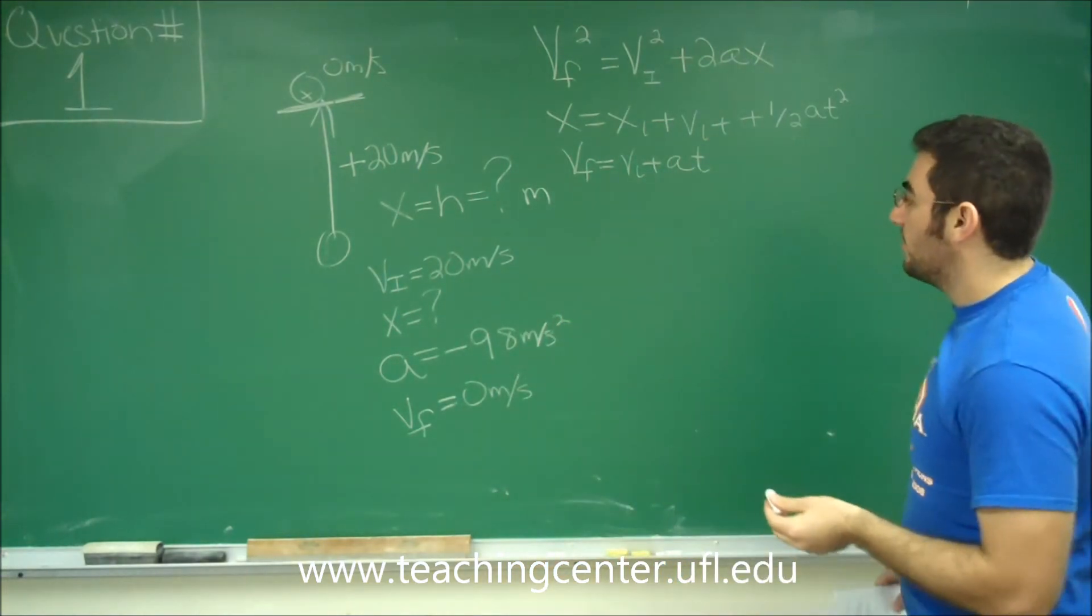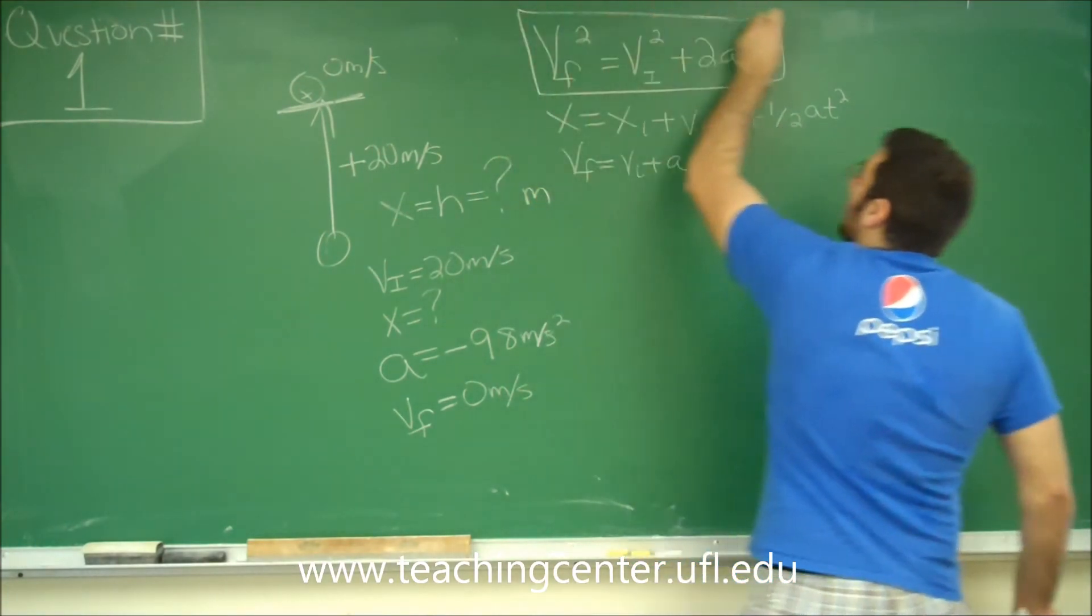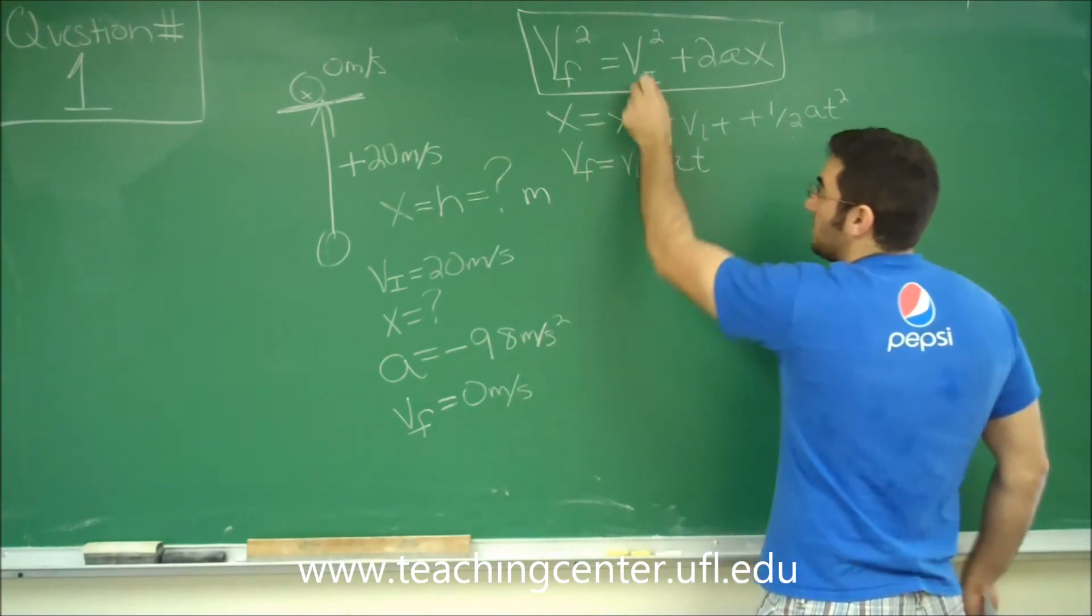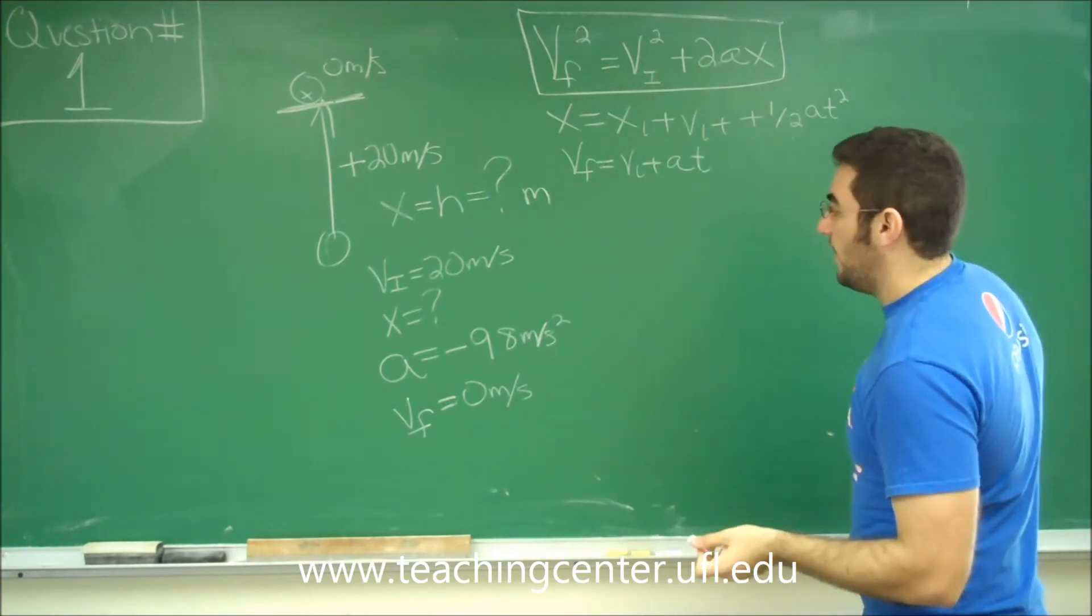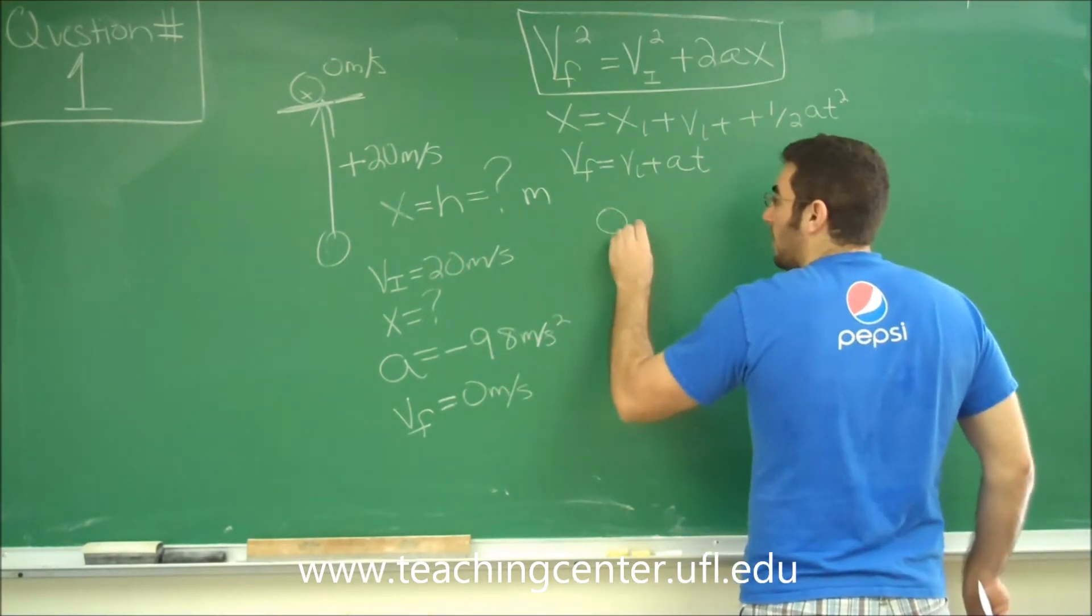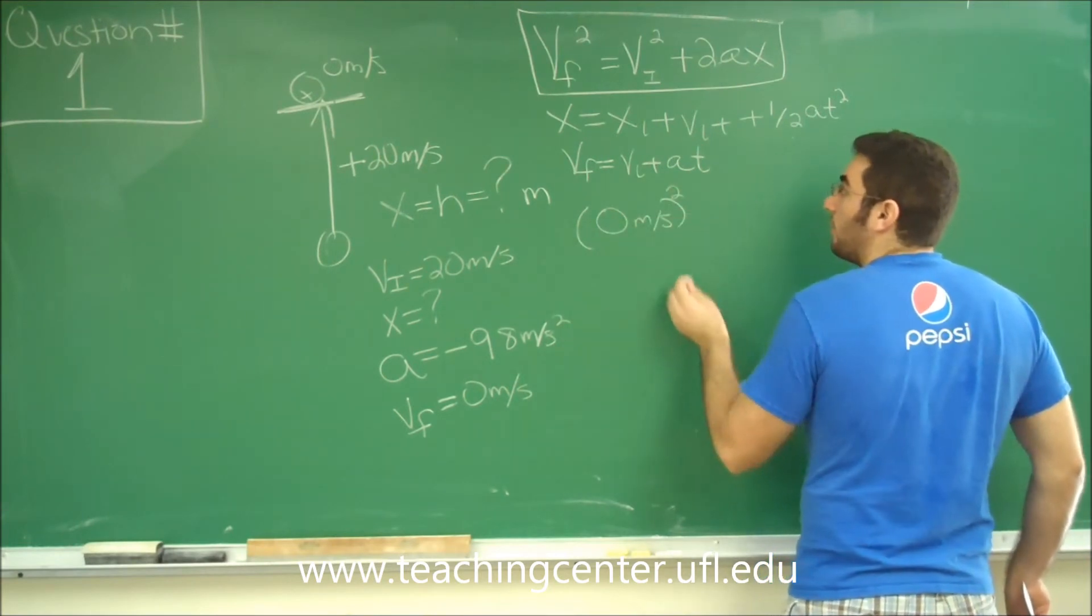So we go to our equation list and we see that final velocity squared, which is 0, equals initial velocity squared plus 2ax. We have everything we need to solve for the height. So we can go ahead and plug all of our numbers in.